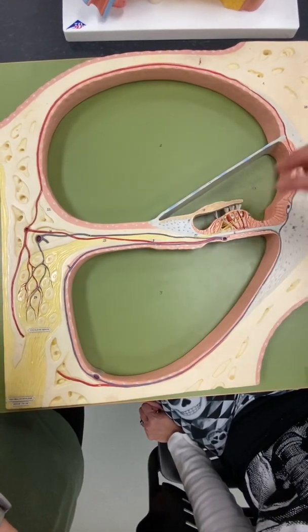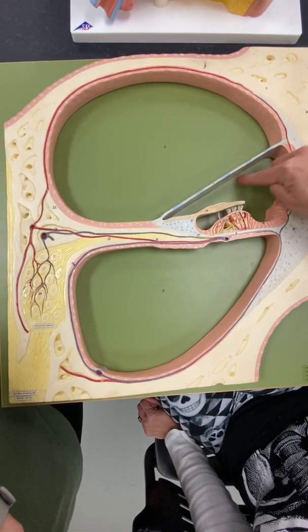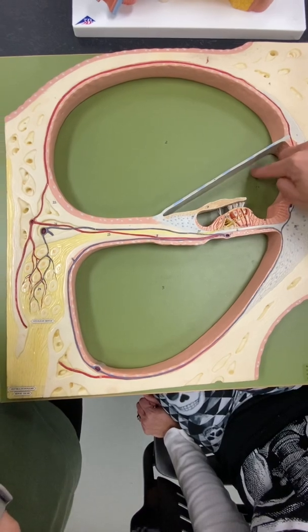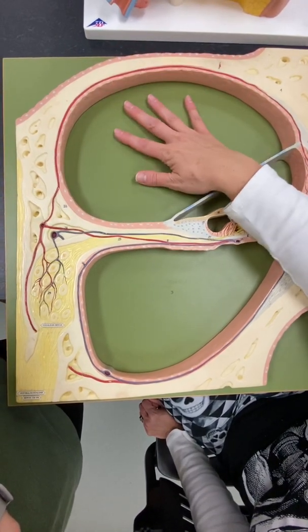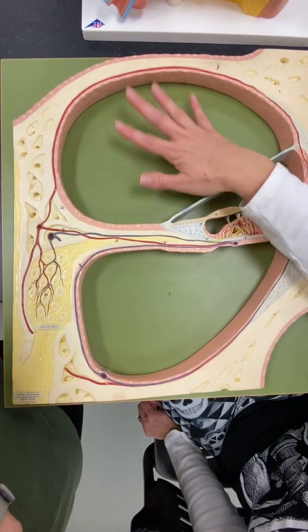The scala media, or the cochlear duct, is this middle portion. So, I always remember you wear your vest on top and panties on bottom. So, scala vestibuli, scala tympani.